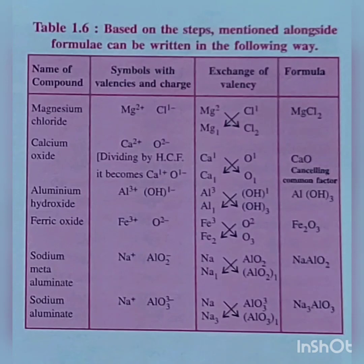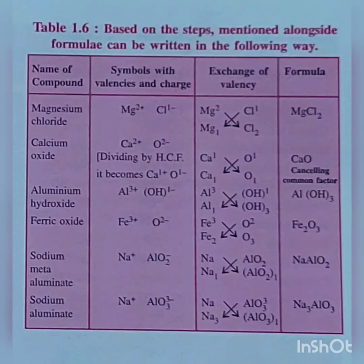For sodium meta-aluminate: sodium (Na) has valency +1 and meta-aluminate (AlO2) has valency -1. Cross-multiplying gives Na once and AlO2 once, so the formula is NaAlO2. For sodium aluminate: aluminate (AlO3) has valency 3-, so cross-multiplying gives Na three times and AlO3 once, giving the final formula Na3AlO3. I hope that you can write any formula for any compound from now onwards.